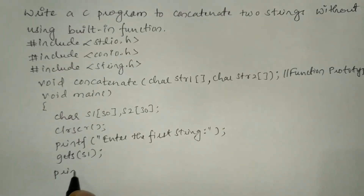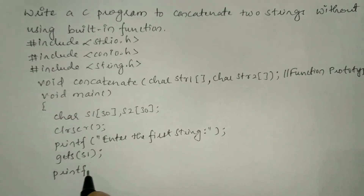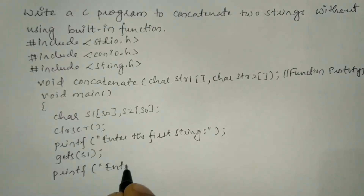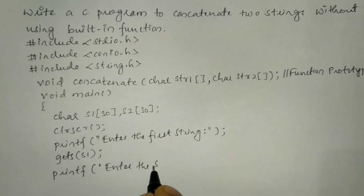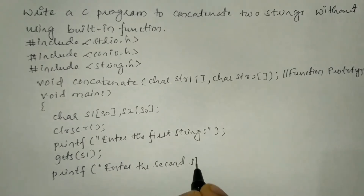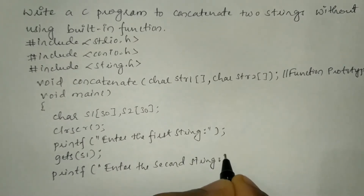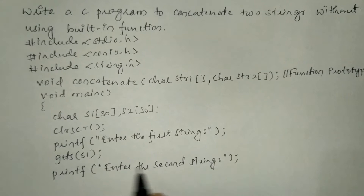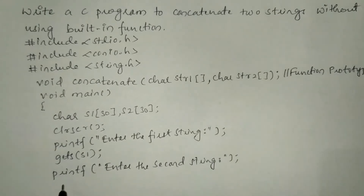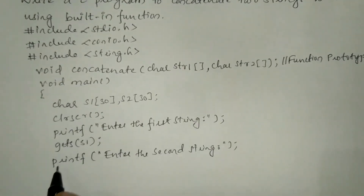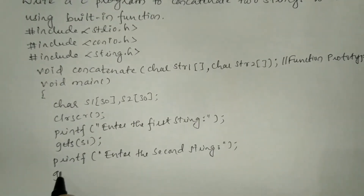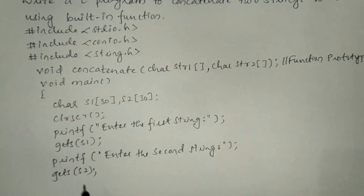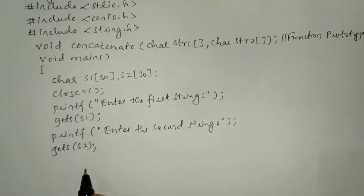Next, we will ask the user to enter the second string. In a double quotation mark I will write 'enter the second string', put a semicolon, and using the same gets function we are going to receive s2 and put a semicolon.